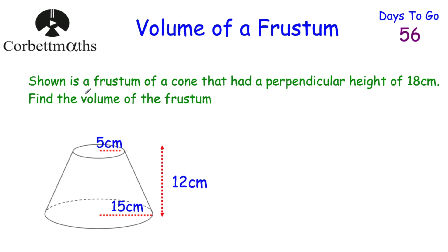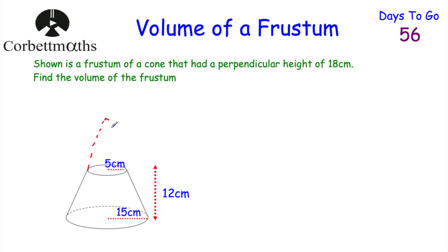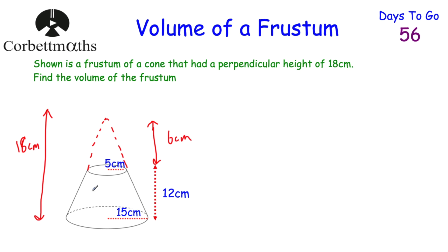Now here's one for you to try. We've got a frustrum of a cone where the cone had a perpendicular height of 18 centimetres. Find the volume of the frustrum. Press pause and try it. The cone had a height of 18 centimetres; the frustrum that's left has a height of 12 centimetres, meaning the top 6 centimetres were removed. We'd find the volume of the whole cone, the part removed, and subtract.